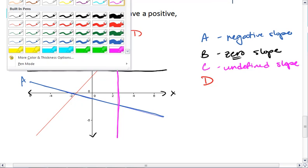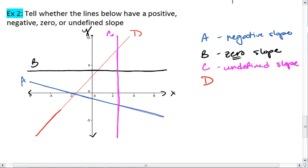And line D has an upward slant, making it a positive slope.